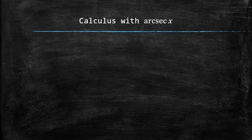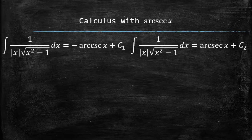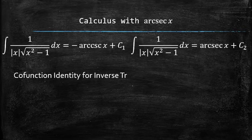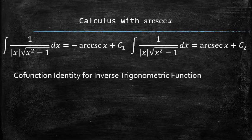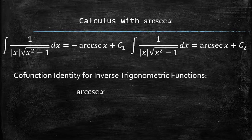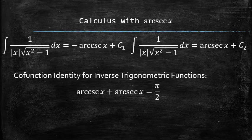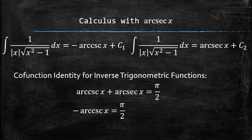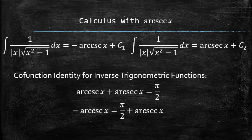If you are familiar with the derivative of arccosecant function, then you probably noticed that we now have two expressions for the same indefinite integral. How is this possible? The reason is the cofunction identity for inverse trigonometric functions that states that the arccosecant of x plus arcsecant of x equals pi over 2. Which means that the negative arccosecant of x is the same as the arcsecant of x, but they are pi over 2 units apart. So it doesn't matter which antiderivative you will use.